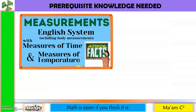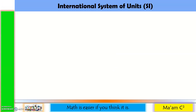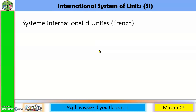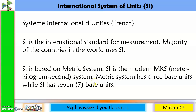In my previous video lesson about measurements, I discussed the English system as well as the measures of time and temperature. Now, we are going to talk about the metric system, also known as the SI system — international system of units. It is called SI because it came from a French word. It is the international standard for measurement, and majority of the countries in the world use SI. SI is based on the metric system.